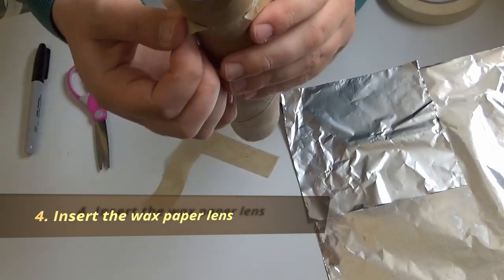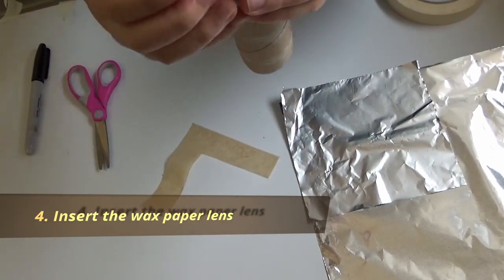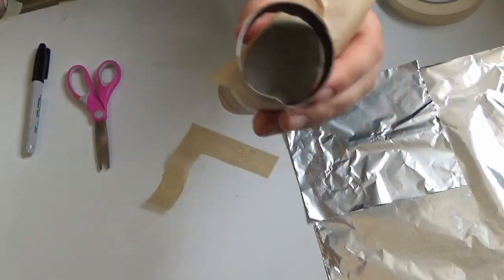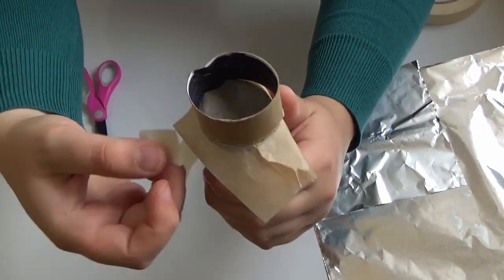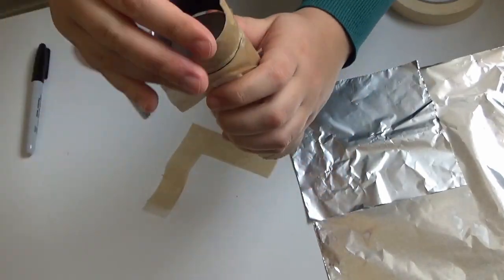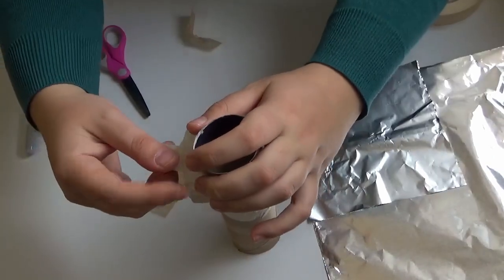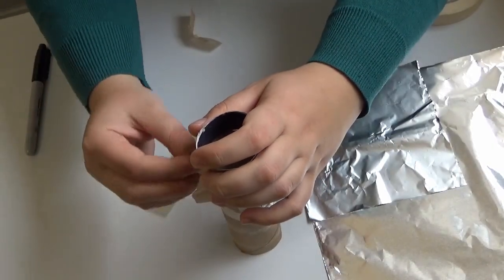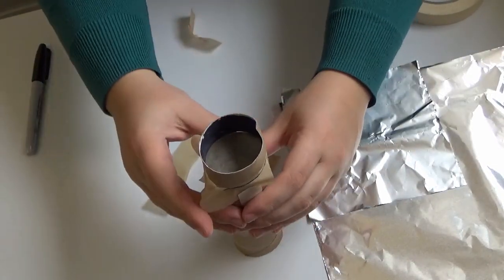So once you've slid it into place, we're going to use tape to hold down the two sides and the third side carefully, making sure that it is flat inside the tube.